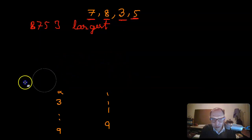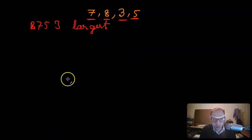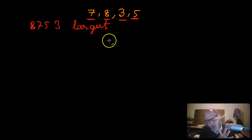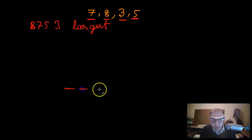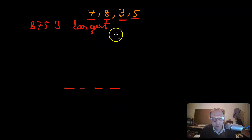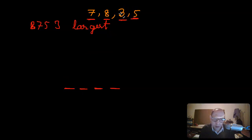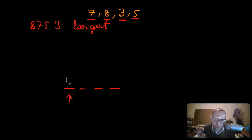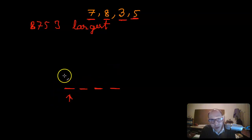Now, what is the smallest four-digit number that can be made using these four digits? I have the ones, tens, hundreds, and thousands place values. In order to make the smallest number, since this is the largest place value in the number and I'm looking for the smallest number possible, I have to contribute the least to this place value.